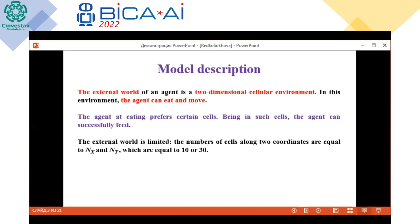Model description. The external world of an agent is a two-dimensional cellular world. In this world, the agent can eat and move. When eating, the agent prefers certain cells. Being in such cells, the agent can successfully feed. The external world is rather small — the number of cells along one dimension is of the order of 10.